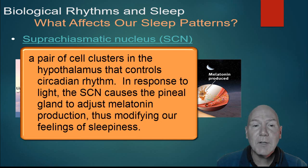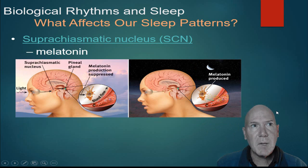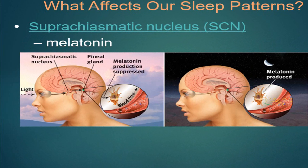What affects our sleep patterns? The suprachiasmatic nucleus and melatonin play a big role. Some people take melatonin supplements to help sleep — though there is no long-term testing on its effects. Melatonin does seem to induce normal sleep, unlike many sleeping pills which don't produce normal sleep patterns. Light enters the eye, stimulates the pineal gland, and suppresses melatonin production, keeping you awake and alert. When it starts to get darker, lack of light stimulation causes melatonin to be produced, your body temperature drops, heart rate slows, you feel drowsy, and it's time to sleep.